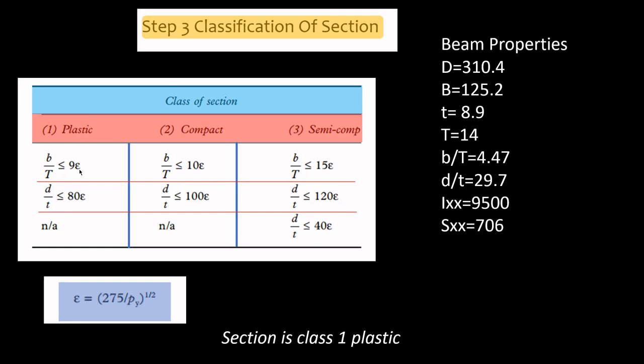You consider this ratio, this thing that looks like letter E, it's a Greek letter epsilon. So it's the value epsilon, it's the square root of 275 divided by design strength. Our design strength was 275 so the square root of 275/275 is basically 1. So this value will be 1. So our ratio of B over T for our section was 4.47 which is less than 9. Again the ratio of D over T here is 29.7 which is less than 80.